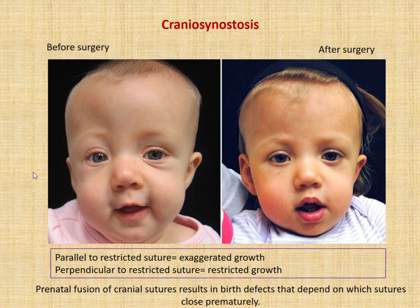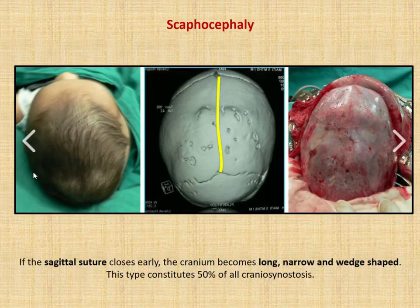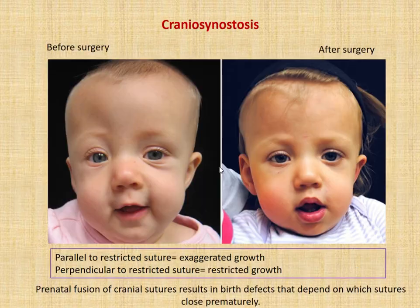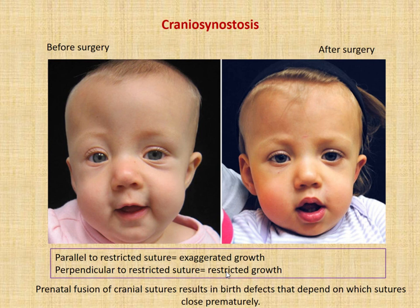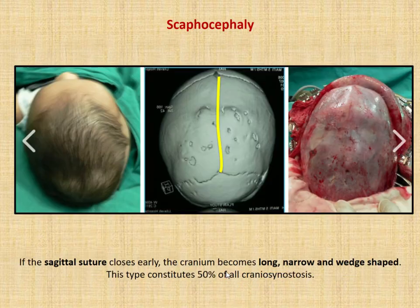There are different names associated with craniosynostosis depending on which suture fuses. The key to understanding the shape is: parallel to the restricted suture, you have exaggerated growth, and perpendicular to the suture, you have restricted growth. That's how you can predict the shape of the cranium and figure out which suture is involved, although imaging is used for that as well.